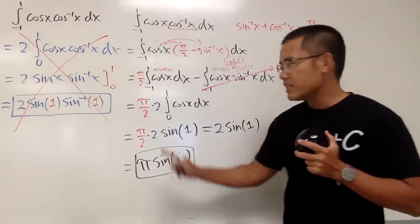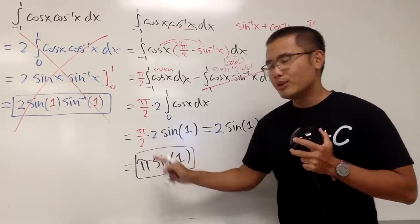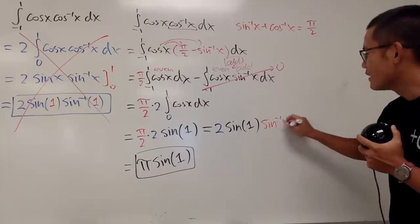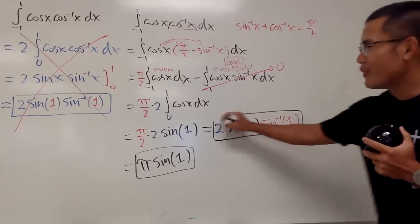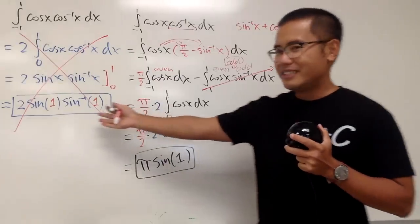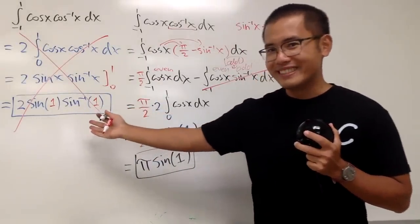But, again, π over 2, we can write that as inverse sine of 1. Well, well, I guess this answer wasn't so wrong, isn't it?